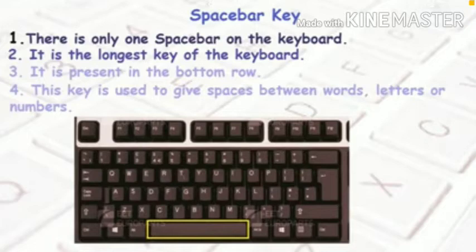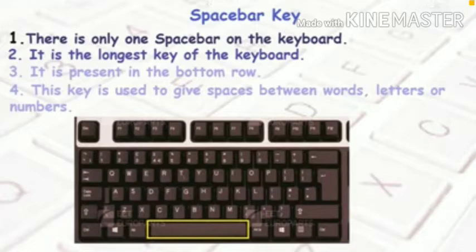Now students, this is my keyboard. Can you see the key at the bottom row? This is the spacebar key. There is only one spacebar on the keyboard. It is the longest key of the keyboard. As you can see, there are small keys on the keyboard, but the longest key is the spacebar. It is present in the bottom row. This key is used to give spaces between words, letters, or numbers.